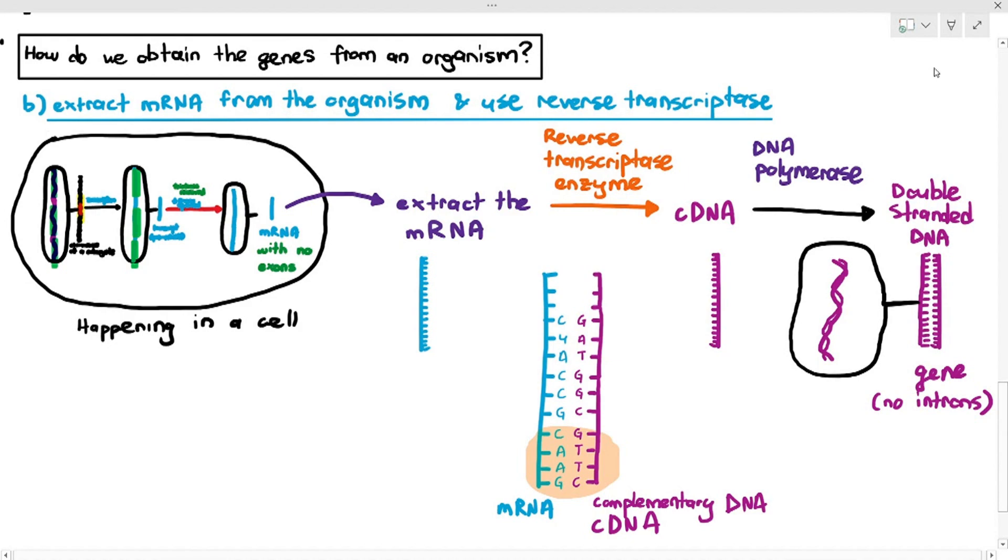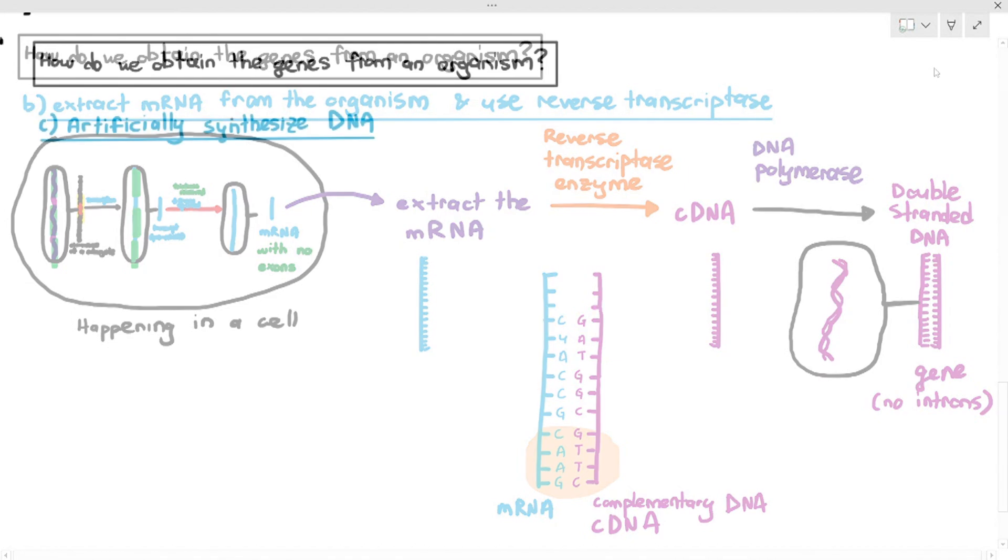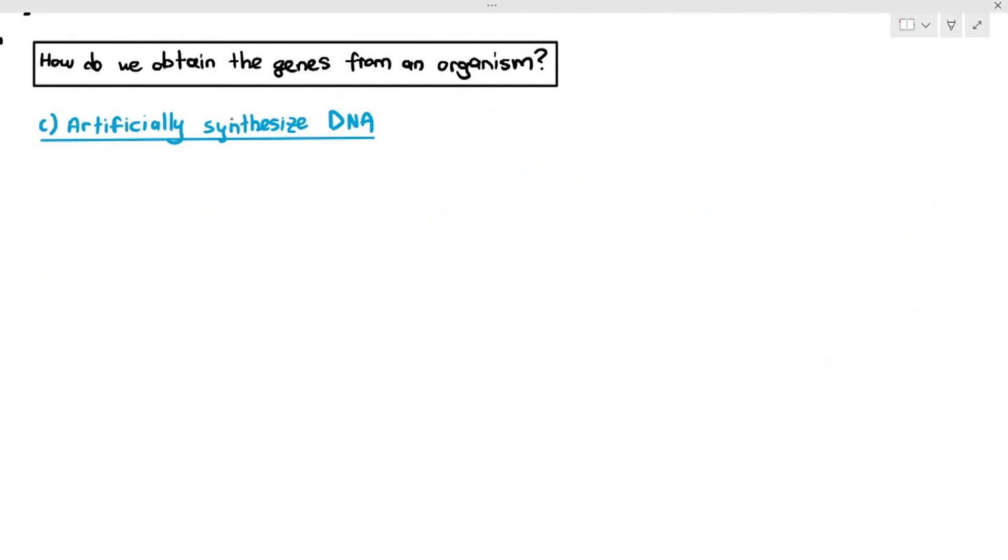The third way of obtaining genes from an organism is by artificially synthesizing the DNA. Now, imagine, as an example, you want to produce this desired protein. The protein here has methionine, histidine, valine, and phenylalanine as a specific amino acid sequence. I want this protein to be produced by the organism, and I need a gene. I can artificially produce a gene if I wanted to.